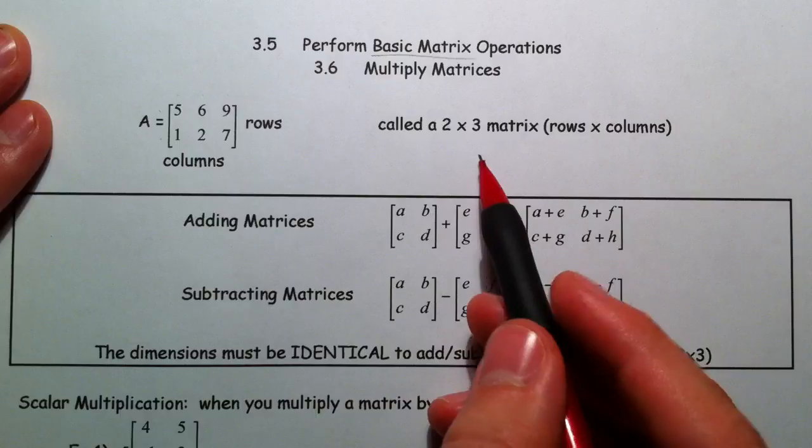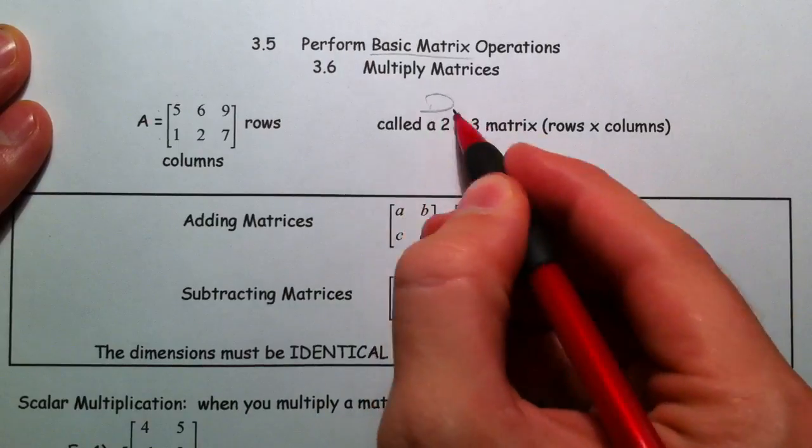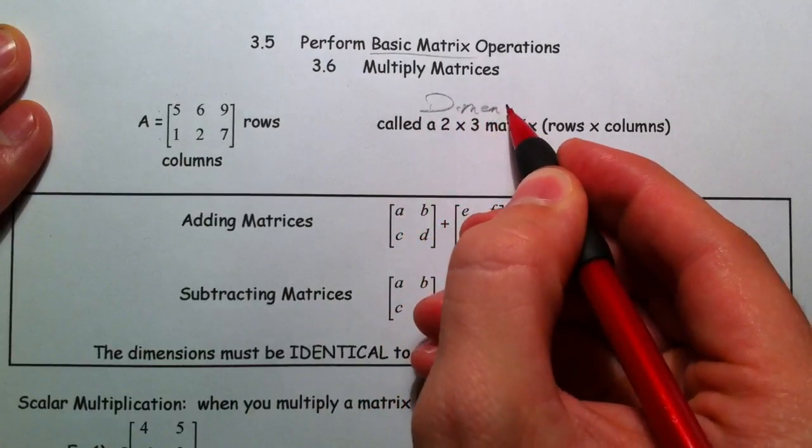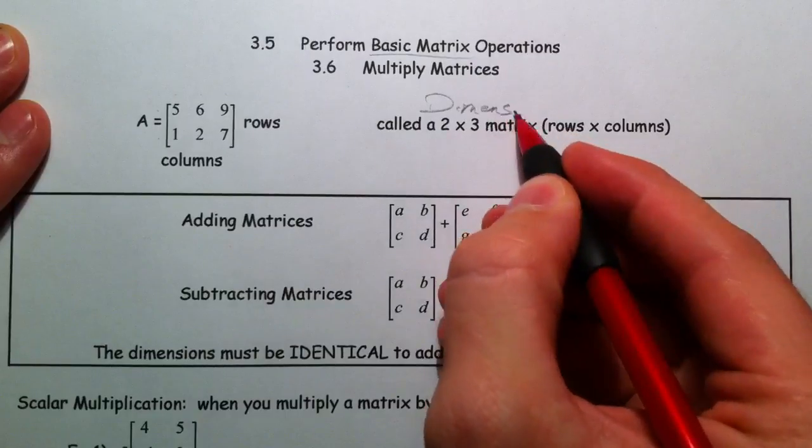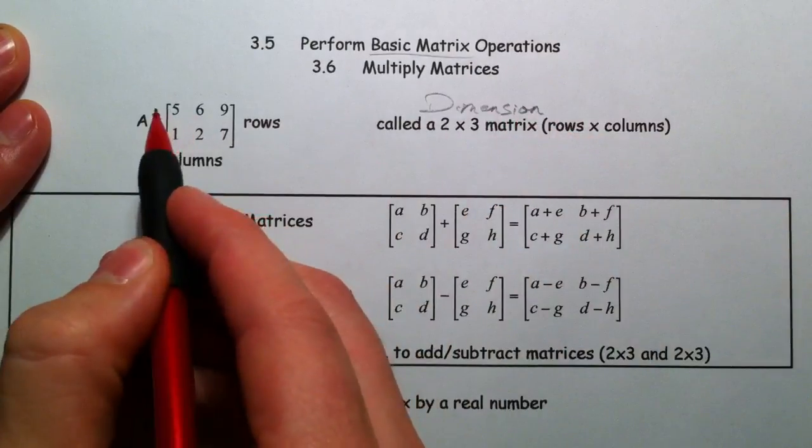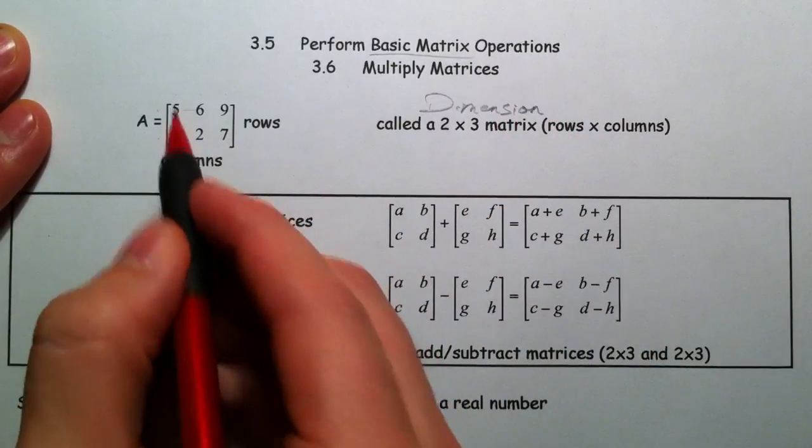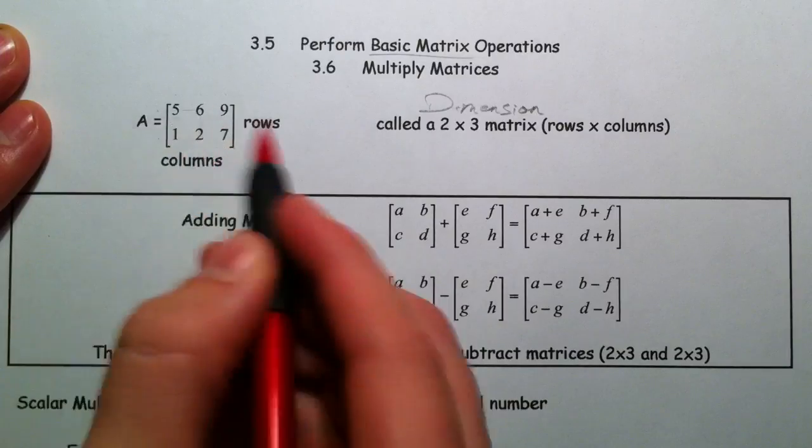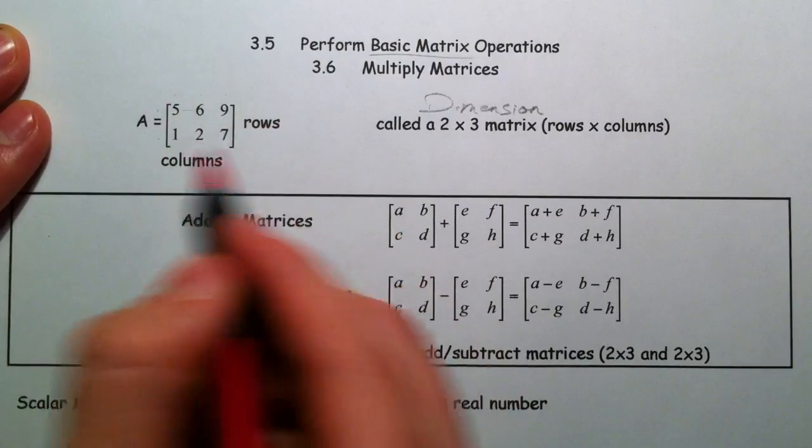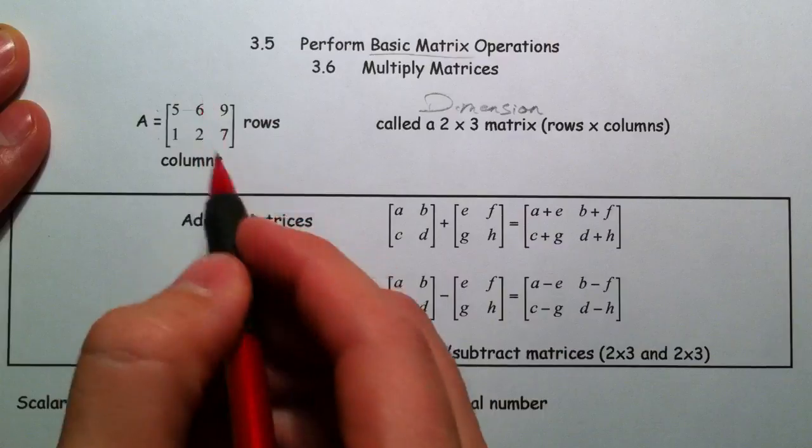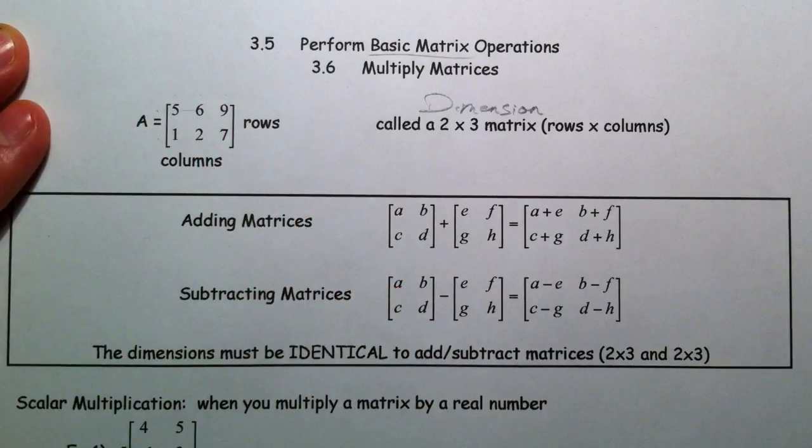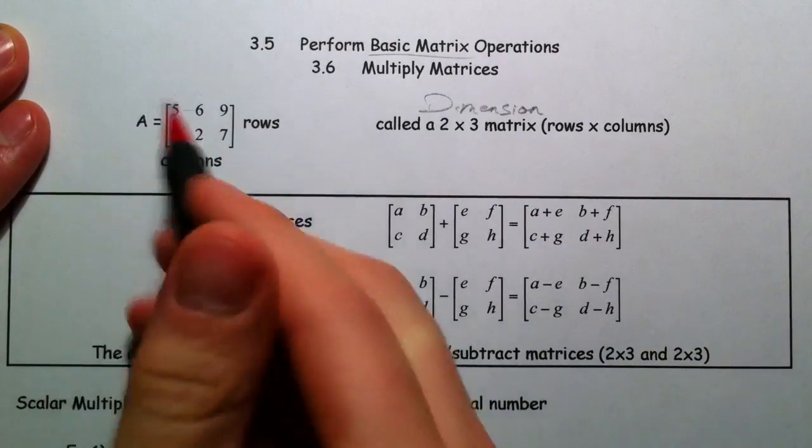And we have dimensions. A dimension of a matrix, you always say rows by columns. So this has one, two rows, and one, two, three columns. Rows go left to right, just like you write in rows. And columns, just like columns on a building, columns that hold up buildings go up and down.